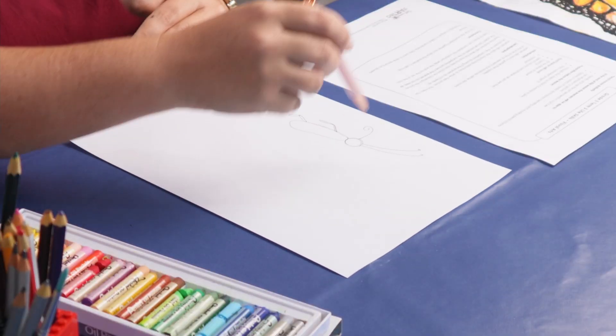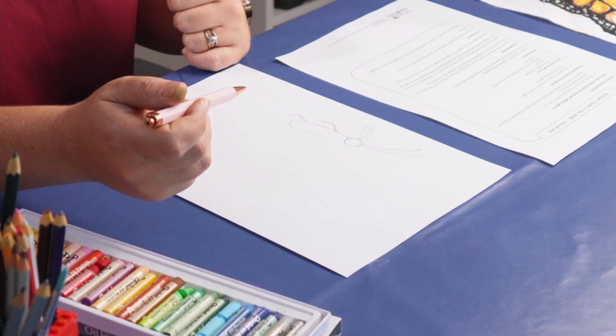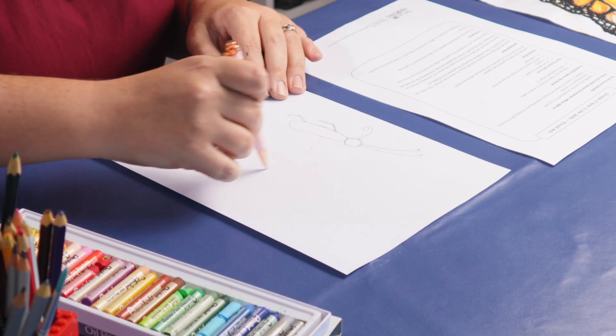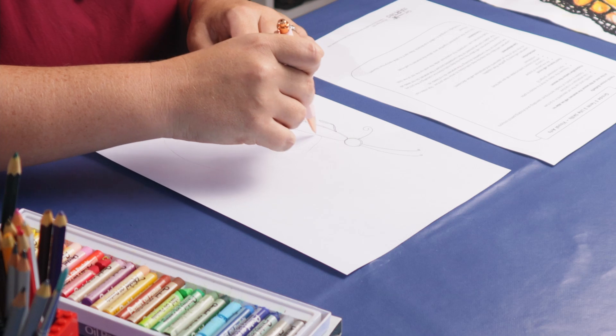All right now we're going to get started with the butterfly's wings. So we're going to start about halfway down his body and just draw a nice big circular shape.